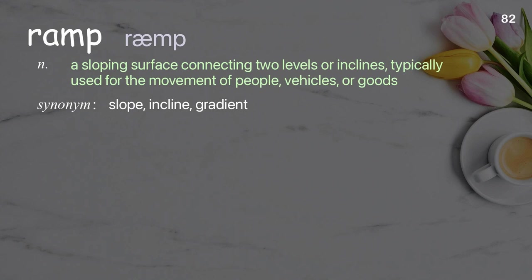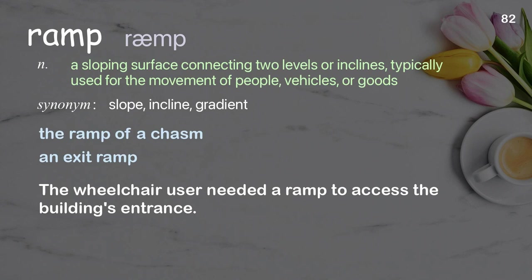Ramp: a sloping surface connecting two levels or inclines, typically used for the movement of people, vehicles, or goods. Examples: the ramp of a chasm, an exit ramp. The wheelchair user needed a ramp to access the building's entrance.